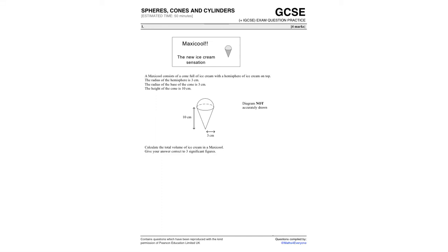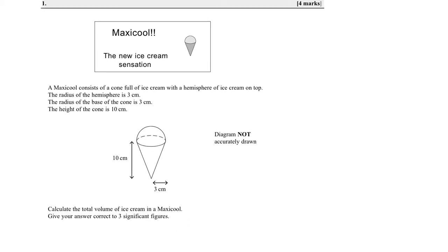Spheres, cones and cylinders — we're looking mainly at compound shapes. The methods we're going to use are: draw them out separately, write all the formulas, and use substitution. It's going to be really logical and we're going to set everything in stone.